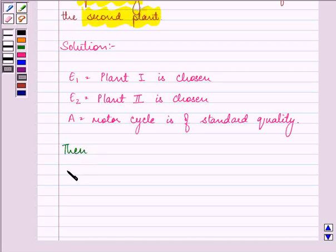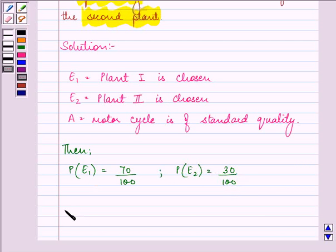Now, we are given a few probabilities. Probability of E1 is 70%, as 70% of the motorcycles are manufactured in plant 1. Probability of E2 is 30%. P(A|E1), the probability that a motorcycle is of standard quality given it is from plant 1, is 80%.